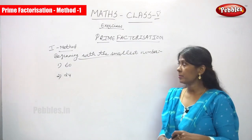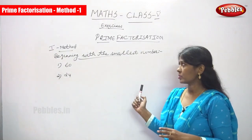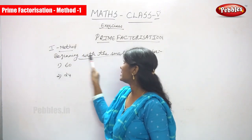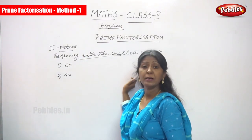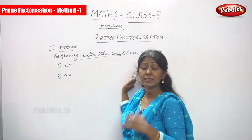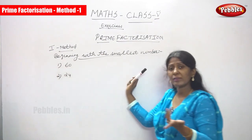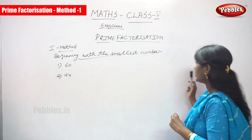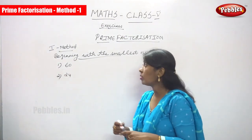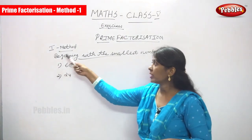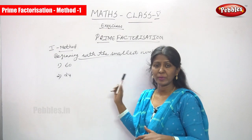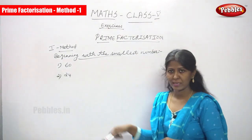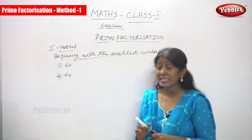Now we are going to see prime factorization. The first method is beginning with the smallest number. We have already seen what prime factorization is, and now we are going to see the method of prime factorization. The first method is beginning with the smallest number.